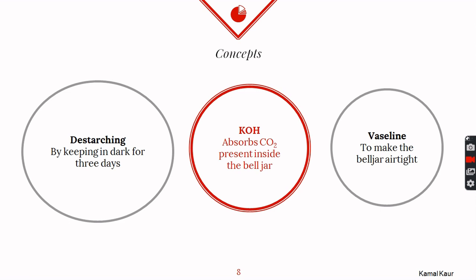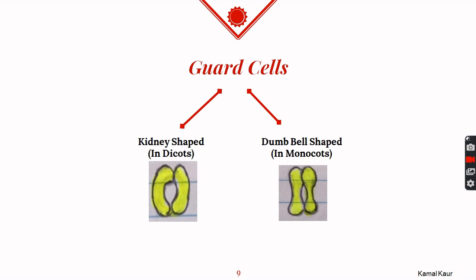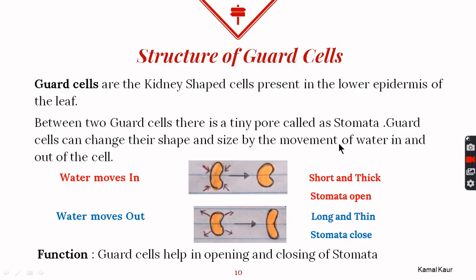Carbon dioxide is required for photosynthesis and oxygen for respiration; these gases enter the plant body through tiny pores called stomata, with the help of guard cells. In dicot plants, guard cells are kidney-shaped, while in monocots they are dumbbell-shaped. Guard cells are present on the lower epidermis of the leaf, and the tiny pore between two guard cells is called stomata.